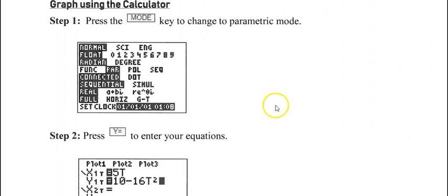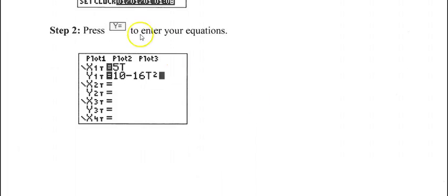Graphing using our TI-84 calculators, you're going to have to press the mode key to change to parametric mode. You'll come down here on that fourth line and see that PAR needs to be highlighted. Then you're going to press y equals to enter your equations. You will notice that you have now gained an x and a y, and then there's a little t that reminds you that you are in parametric mode.